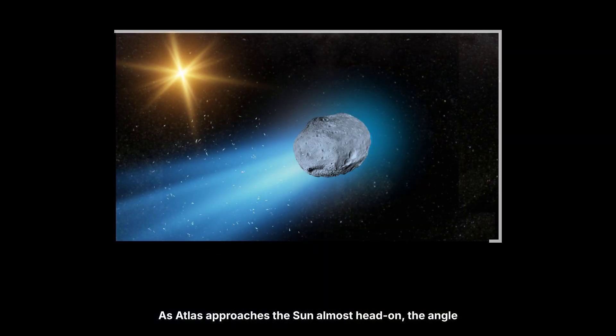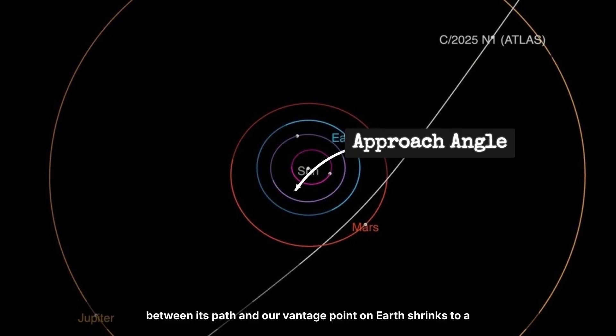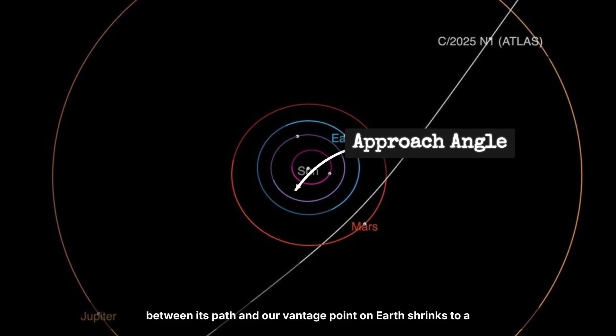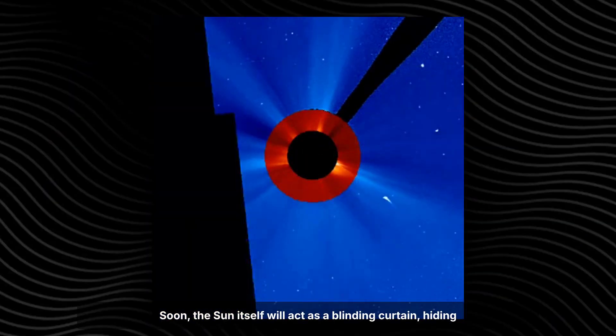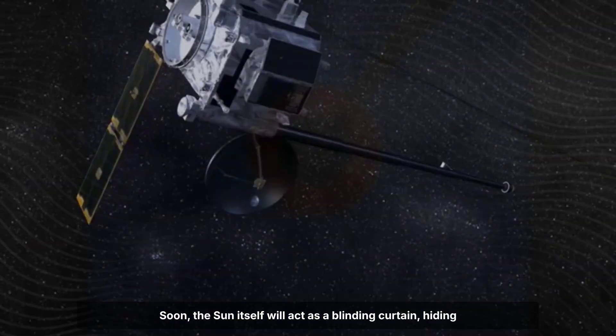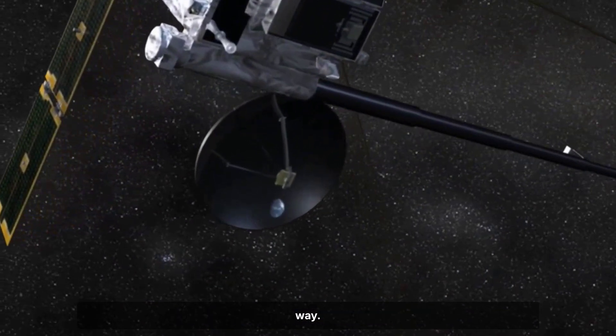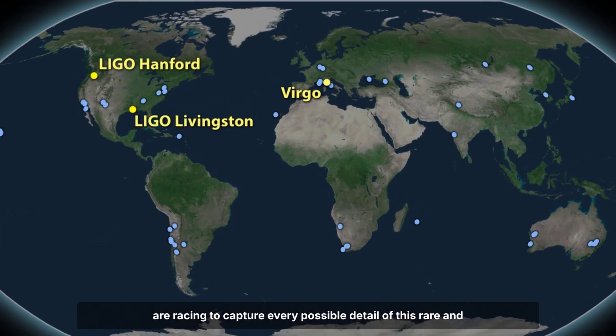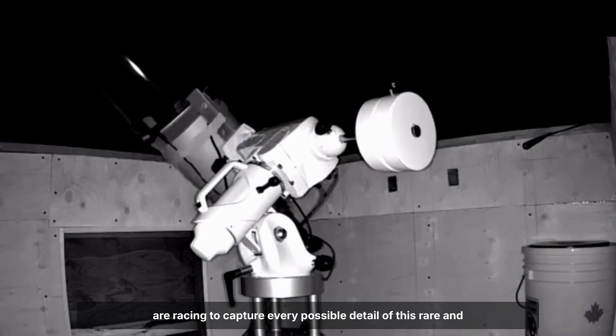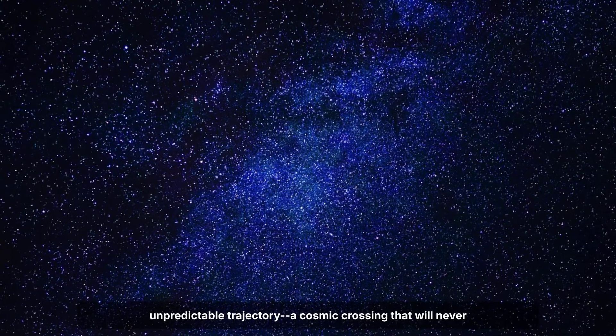As Atlas approaches the sun almost head-on, the angle between its path and our vantage point on Earth shrinks to a razor's edge. Soon, the sun itself will act as a blinding curtain, hiding the interstellar visitor from every telescope pointed its way. But before that blackout arrives, the world's astronomers are racing to capture every possible detail of this rare and unpredictable trajectory, a cosmic crossing that will never be seen again.